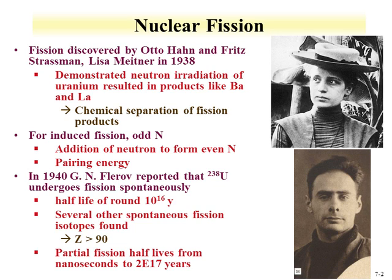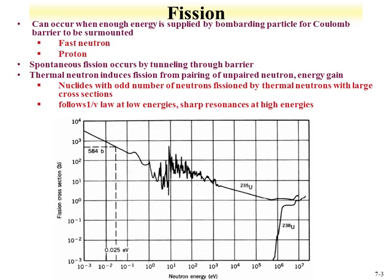Through further investigations, several other spontaneous fission isotopes were found. Partial fission half-lives can range from nanoseconds to 2×10^17 years, so uranium-238's partial fission half-life is actually rather long. In addition to thermal neutron-induced fission, fission can also occur if enough energy is supplied to overcome the Coulomb barrier. Fast neutrons can induce fission — as shown in plots of neutron energy vs. fission cross-section for uranium-238, which rises above 1 MeV. A proton can also induce fission.